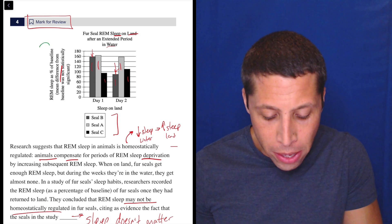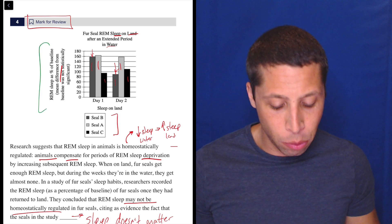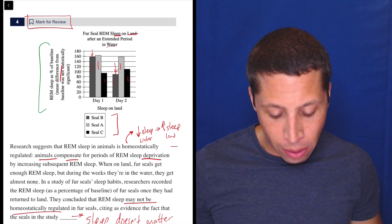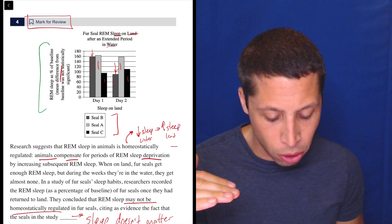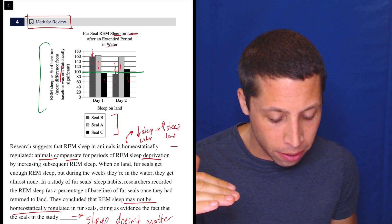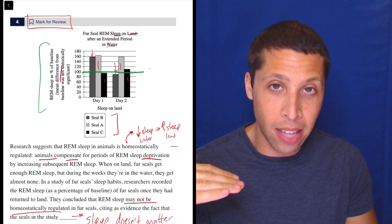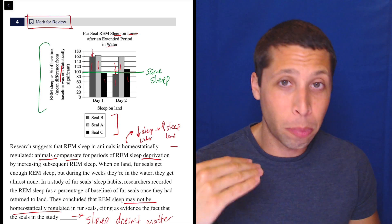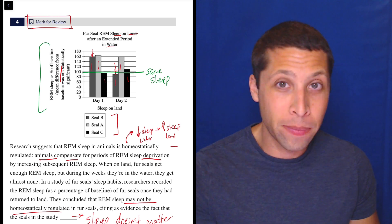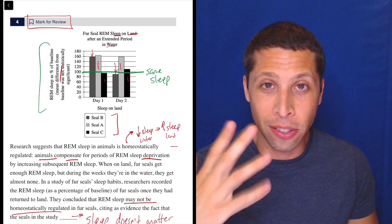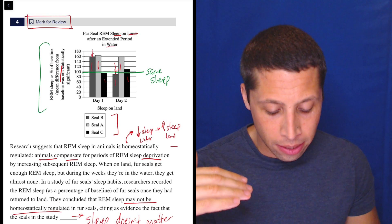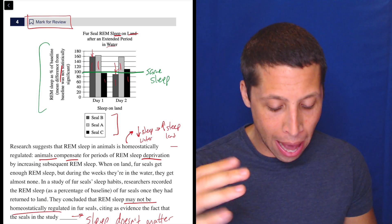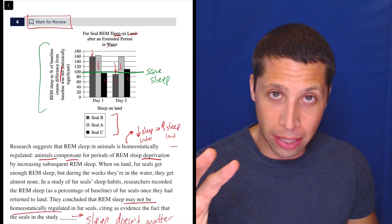The hardest part is the stupid y-axis. Here's what it means: REM sleep is shown as a percent of baseline — there is some base amount of sleep they're getting, and that would be the 100 mark — meaning the same amount of sleep as before. It looks like Seals B and A got more sleep when they came back, but Seal C got a little bit less. That's day one.